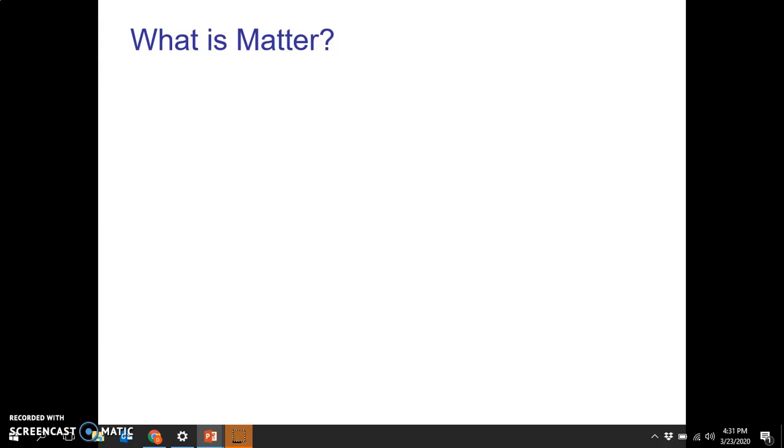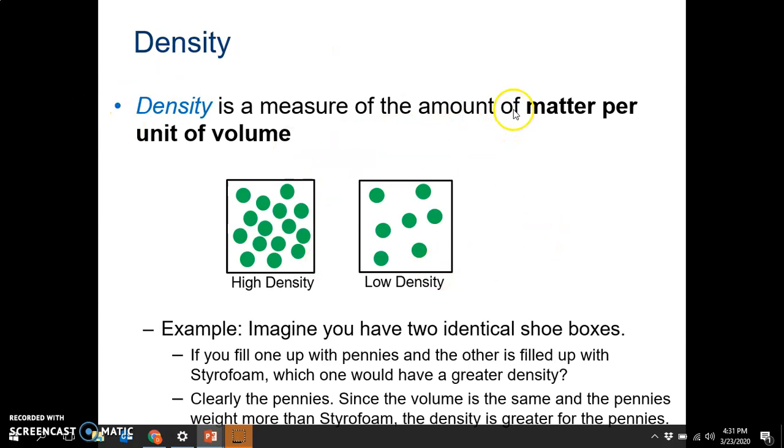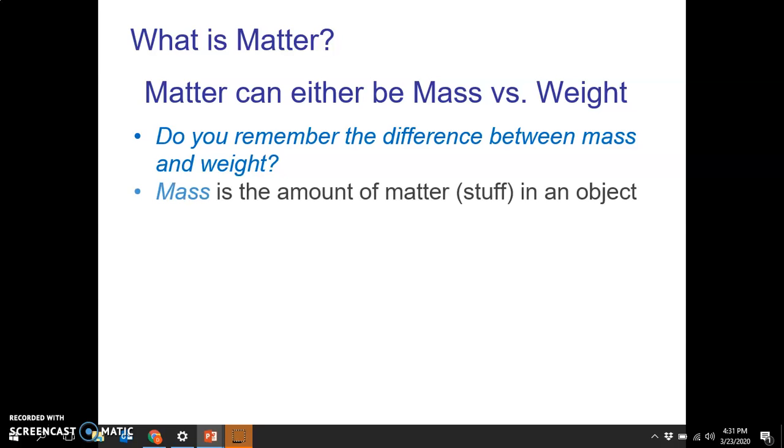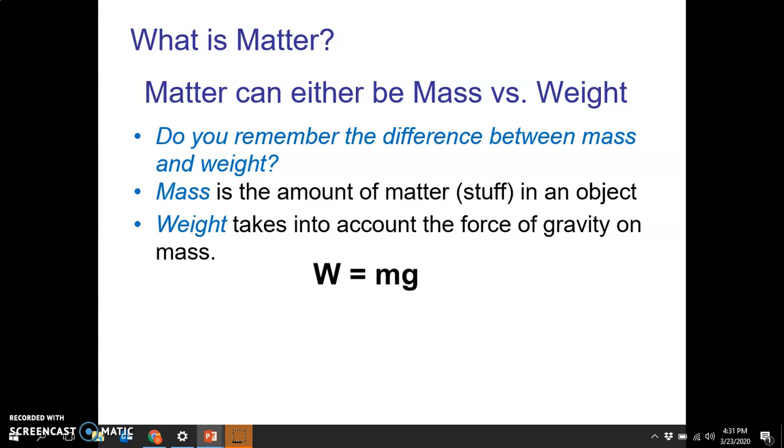So what is matter? The definition of density is the amount of matter per unit volume. Matter can be either mass or weight. We actually touched on mass versus weight back in unit three when we did unit conversions and metric and US customary. Mass is the amount of stuff in an object, whereas weight takes into account the force of gravity on a mass. We say that weight is equal to mass times the acceleration due to gravity.